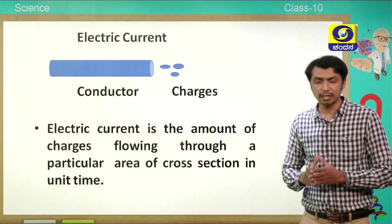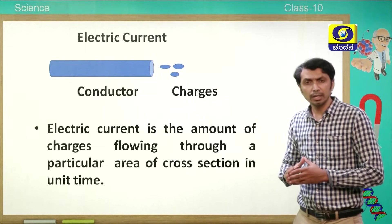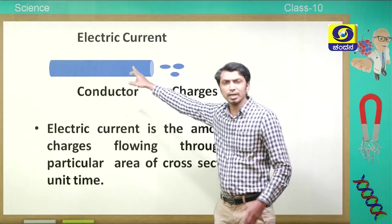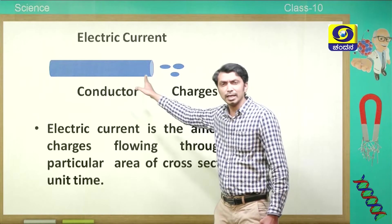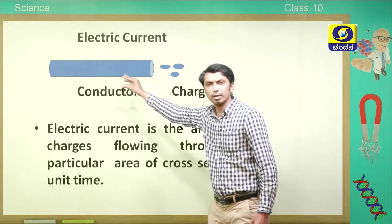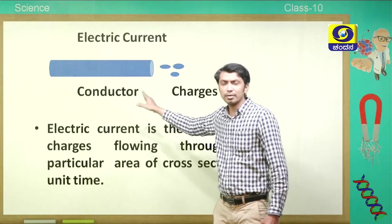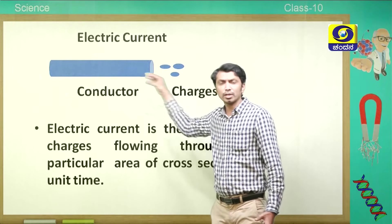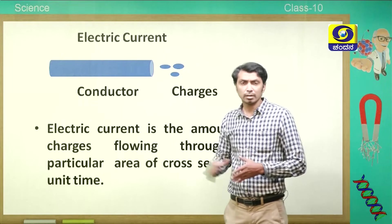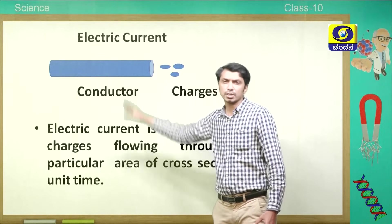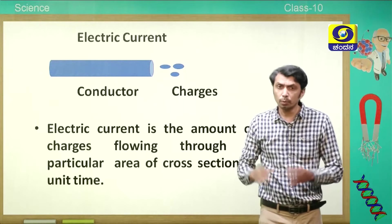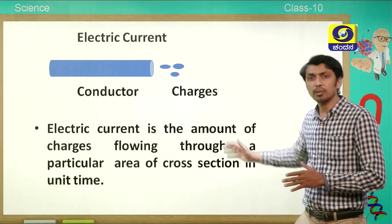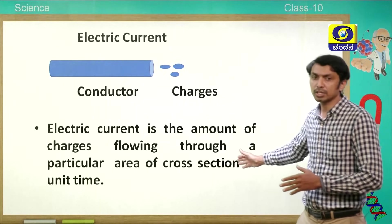Whenever charges are moving in a conductor, we call it electric current. If we take any cross-sectional area of a conductor and calculate the total number of charges crossing that area, that gives us the electric current passing through the conductor — just like measuring the amount of water flowing past a point in a pipe. Electric current is the amount of charge flowing through a particular area of cross-section in unit time.